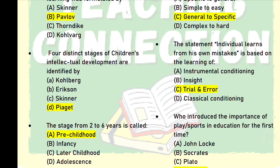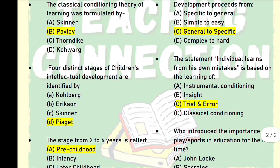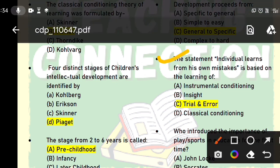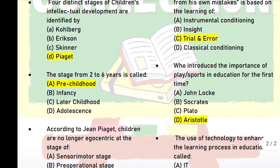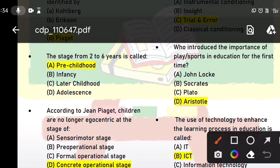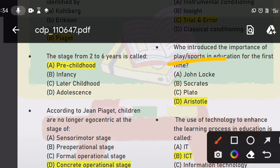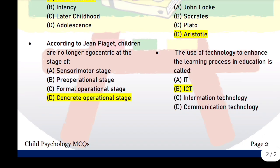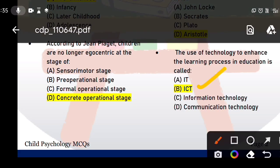The statement that an individual learns from their own mistakes is based on the trial and error theory of learning. Next, who introduced the importance of play and sports in education for the first time? The answer is Aristotle. Next question: the use of technology to enhance the learning process in education is called what? The right answer is ICT.